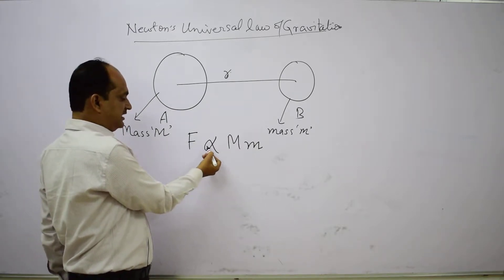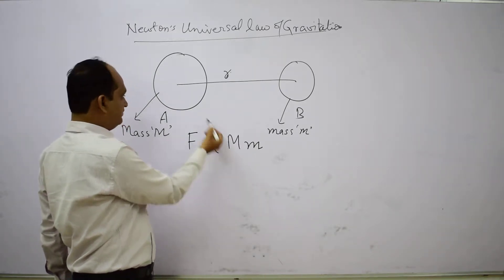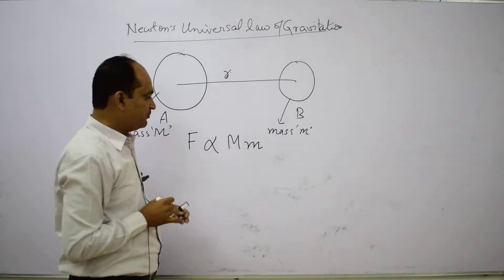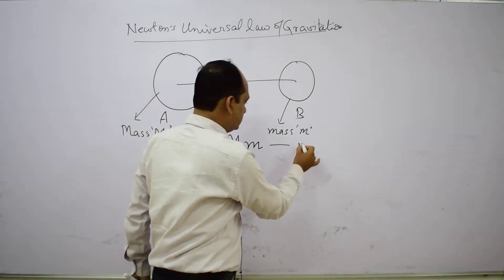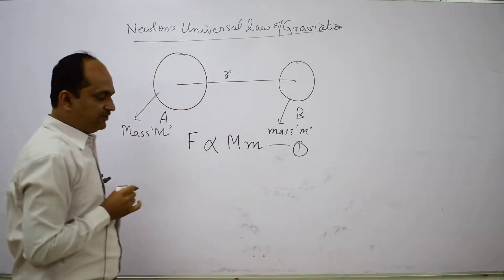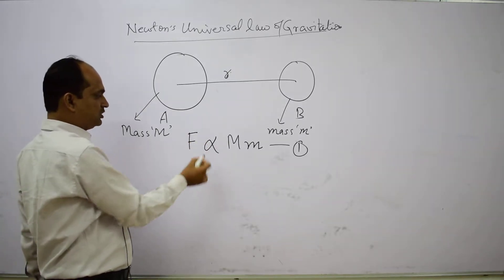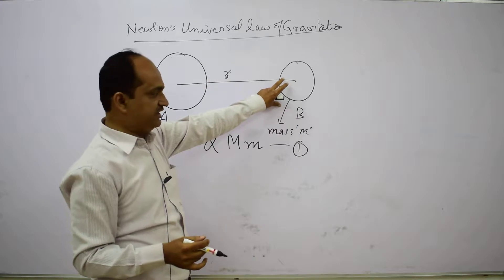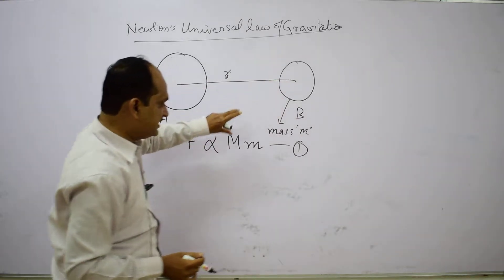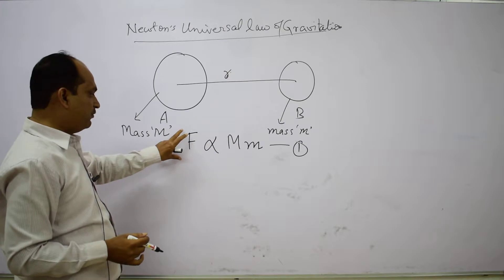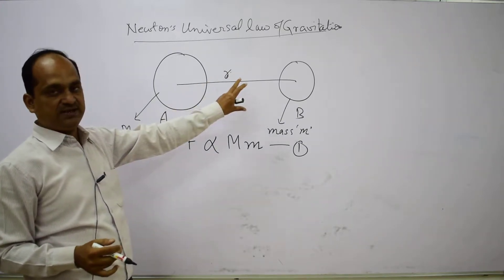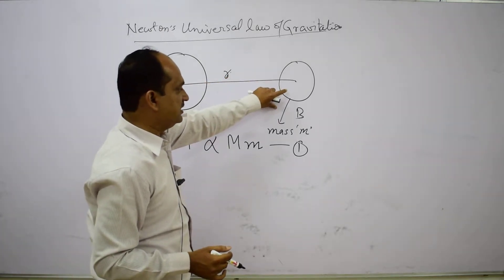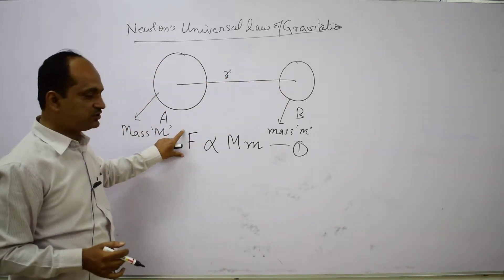We can write F is directly proportional to capital M (mass of body A) multiplied by small m (mass of body B). This is our first equation. From this we conclude that if the mass of either body is increased by any factor, the force increases by the same factor, and if mass is reduced, the force reduces by the same factor.